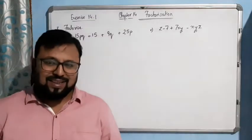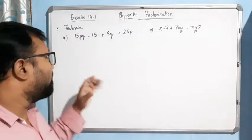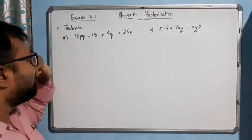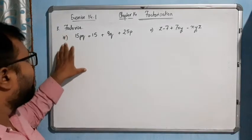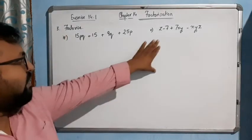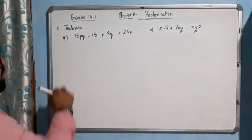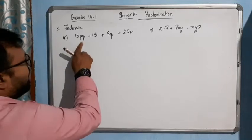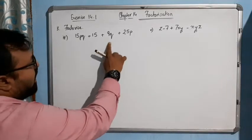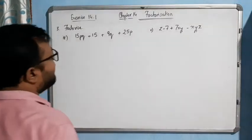Hello students. Now we come to the remaining part of the last question, question number 3, here part 4 and part 5. Part 4 says: 15PQ plus 15 plus 9Q plus 25P.